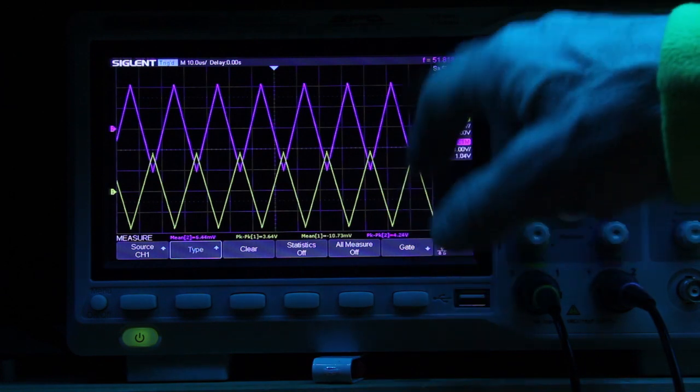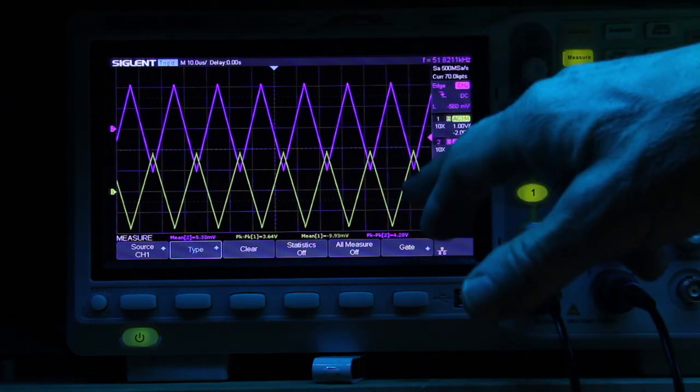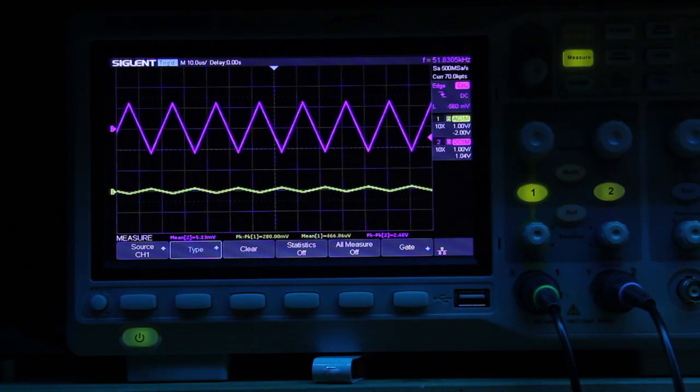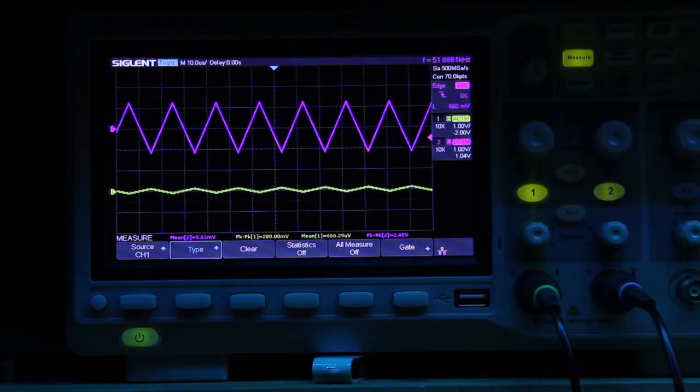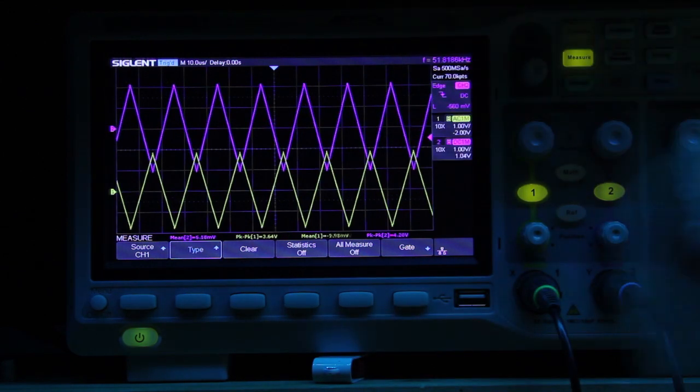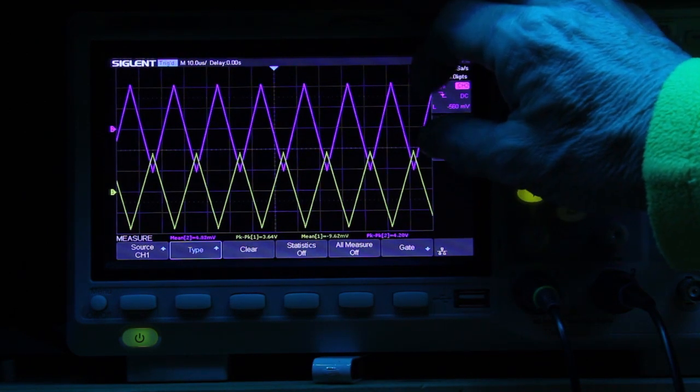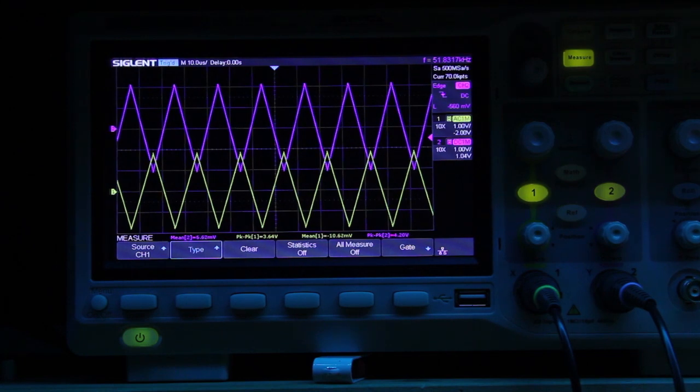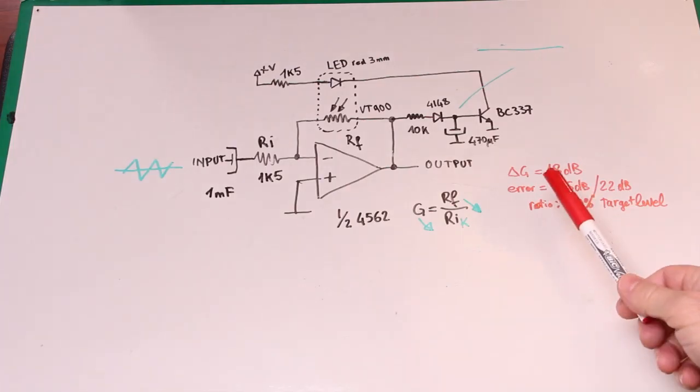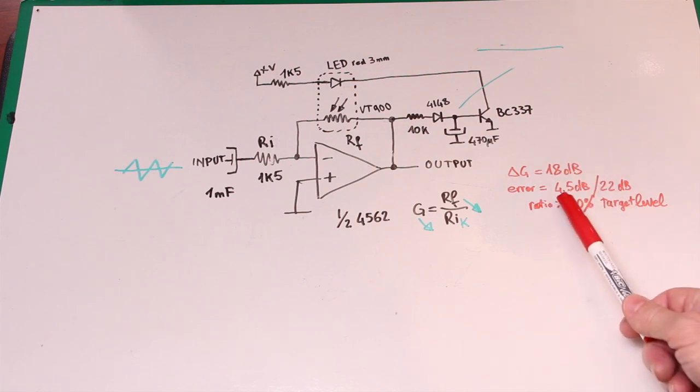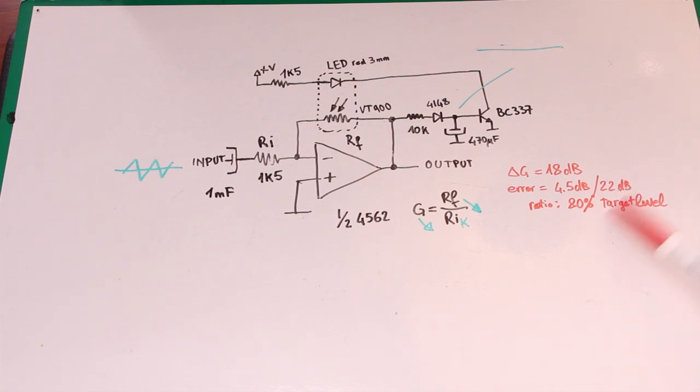The gain is about 18dB and the error is about, between the minimum and the maximum we have an error of amplitude in output which is about 4.5dB. The circuit has a dynamic gain of 18dB and an output error of 4.5dB over 22dB of input variation. So the ratio is about 80% to the target level.